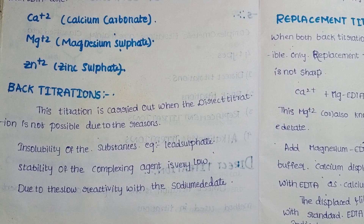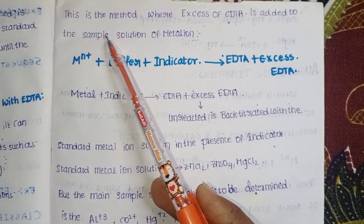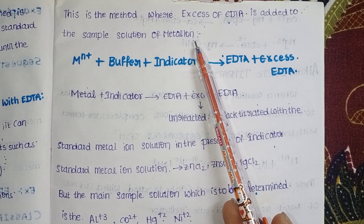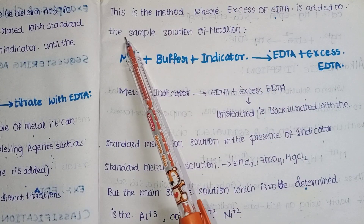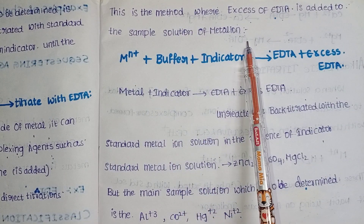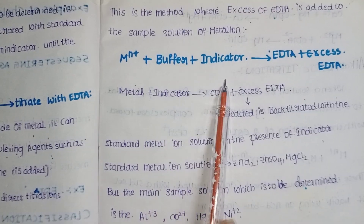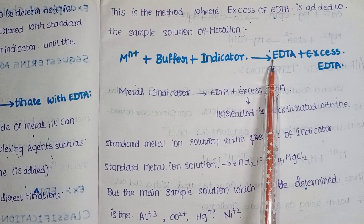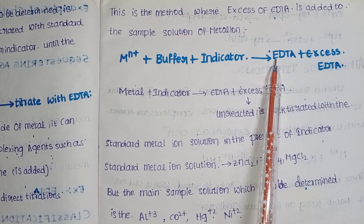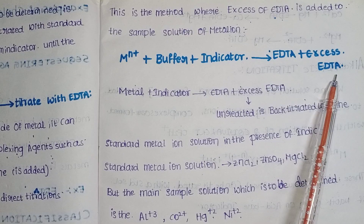Back titrations are used due to the slow reactivity with sodium EDTA. In this method, excess EDTA is added to the sample solution of metal ion with buffer and indicator, and it is titrated against the standard EDTA, which acts as the complexing agent, with the excess EDTA noted.